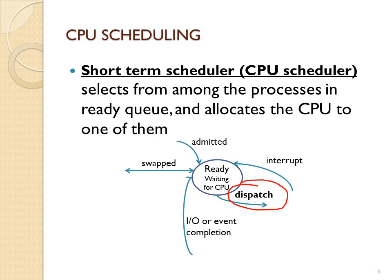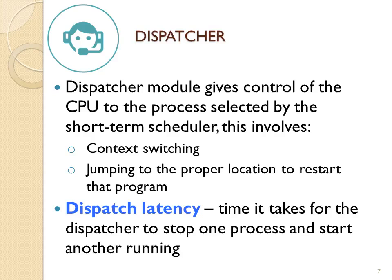This unit is about CPU scheduling algorithms. The dispatcher is the part of the operating system that takes the first process that is ready and puts it onto the CPU. That involves a context switch and making sure that the process gets loaded starting where it was interrupted last time or where it left for IO, so it doesn't have to be restarted every time.